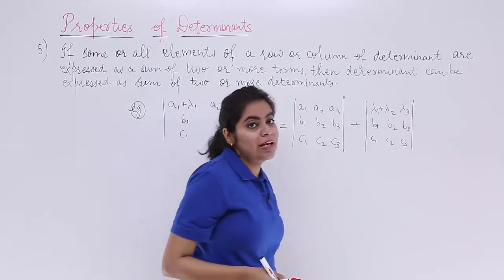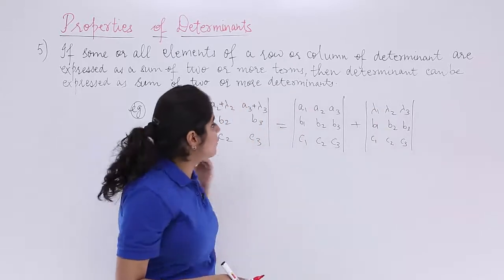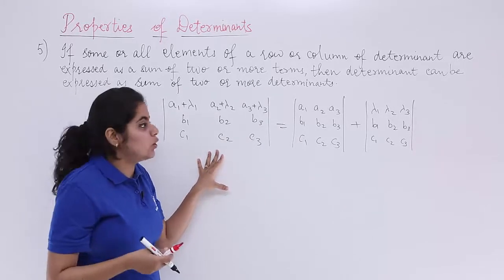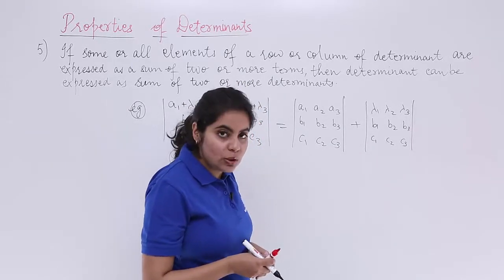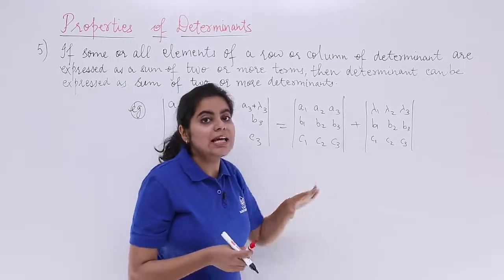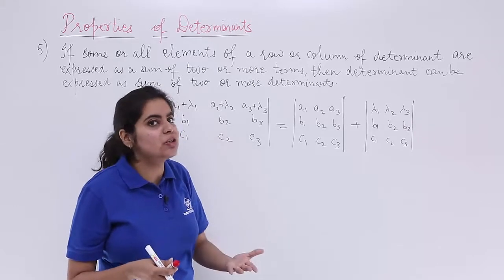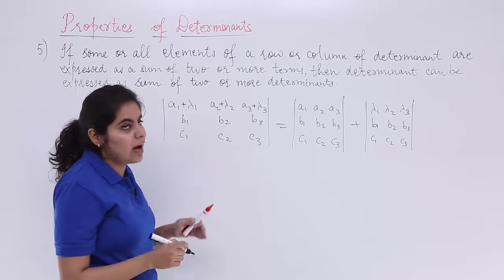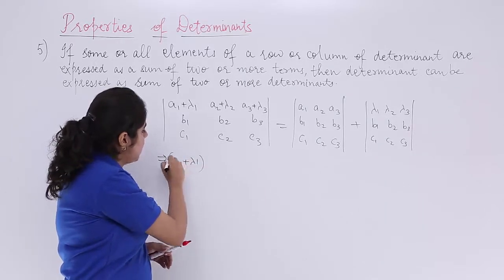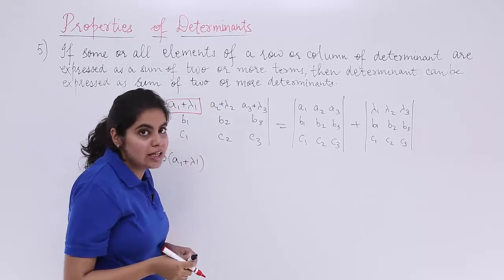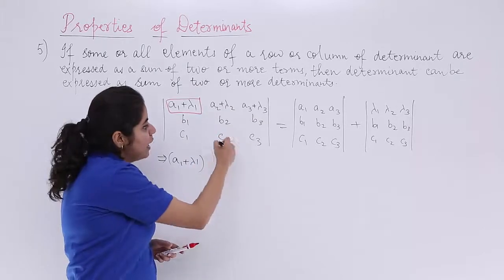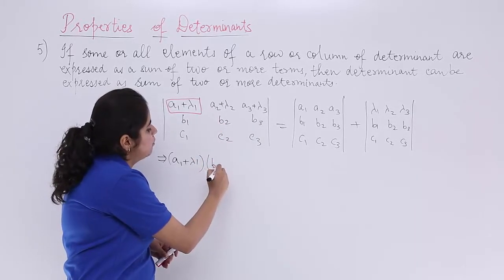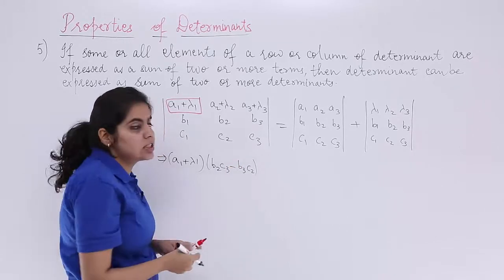Now we have to verify that the result from evaluating the original determinant equals the result from evaluating the sum of these two determinants. Expanding along the first row: the first element is a1 plus lambda1. Ignoring the first row and first column, the sub-determinant is b2, b3, c2, c3, which gives b2·c3 minus b3·c2.